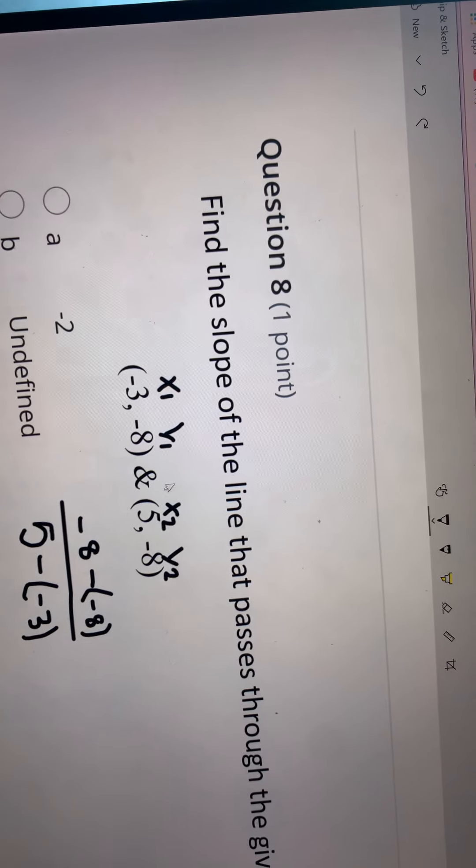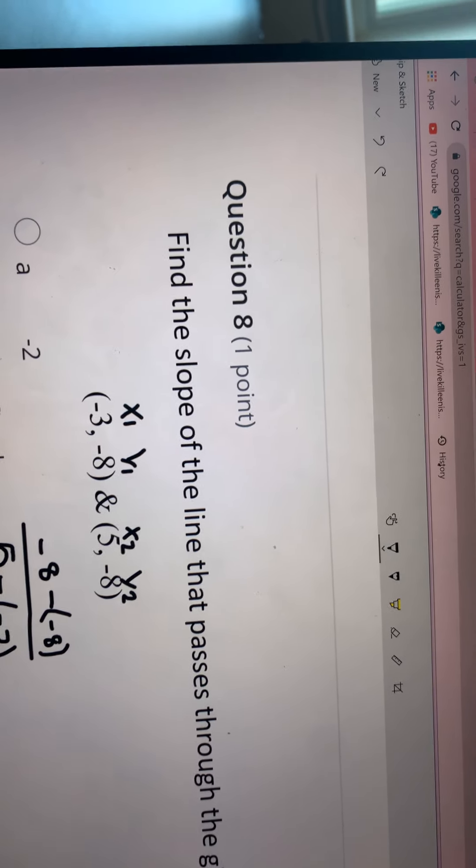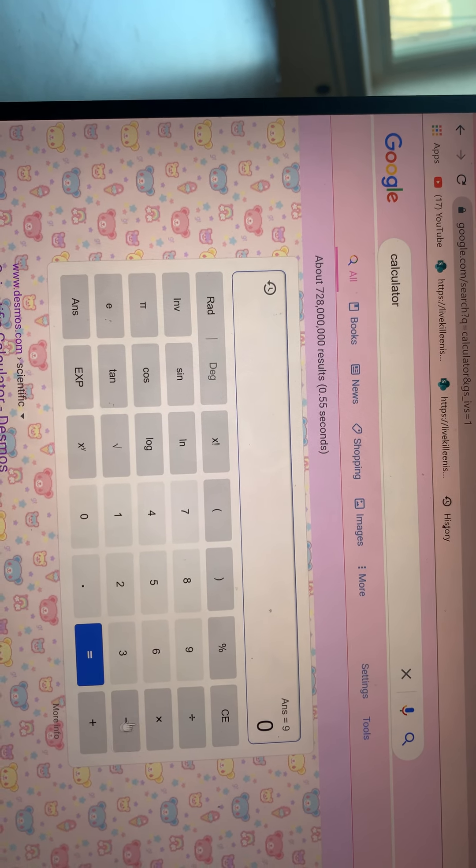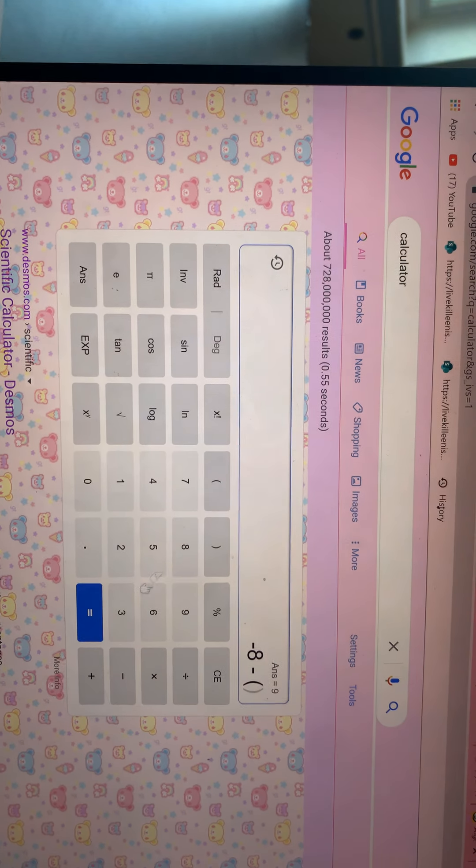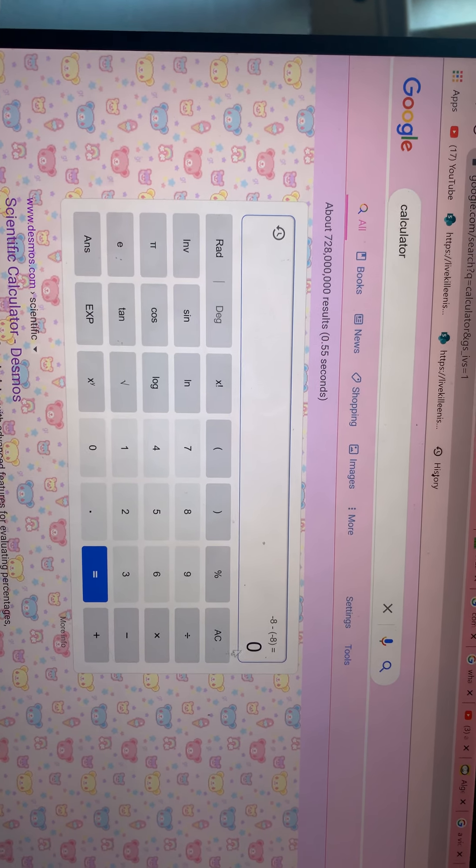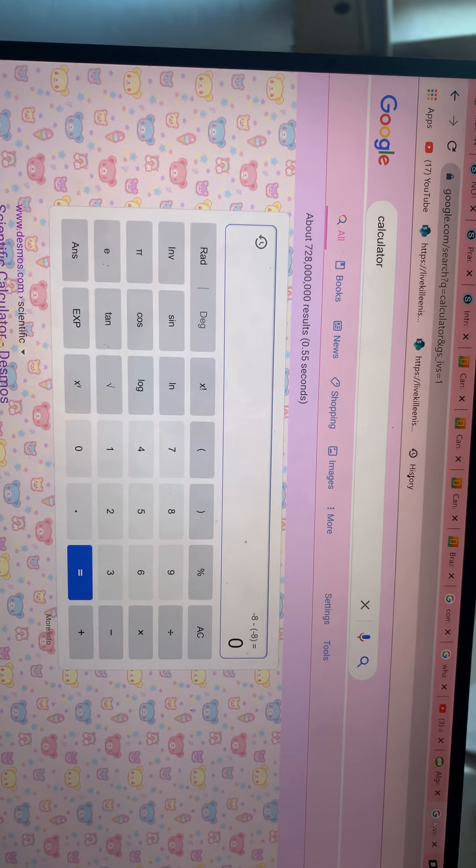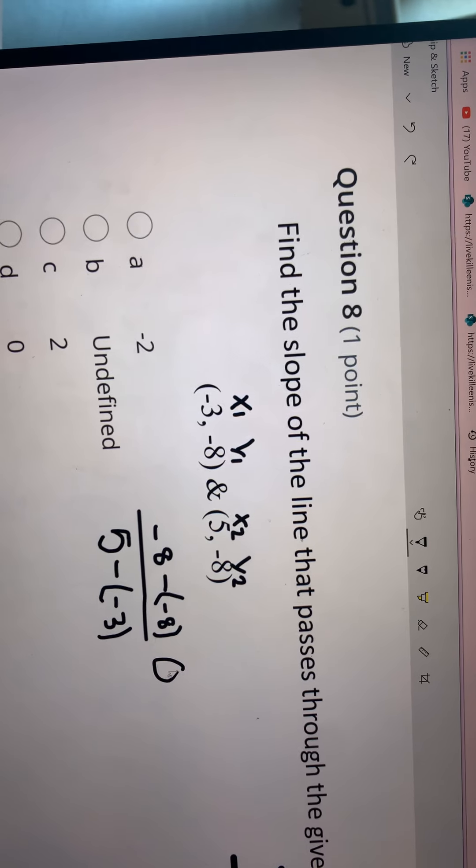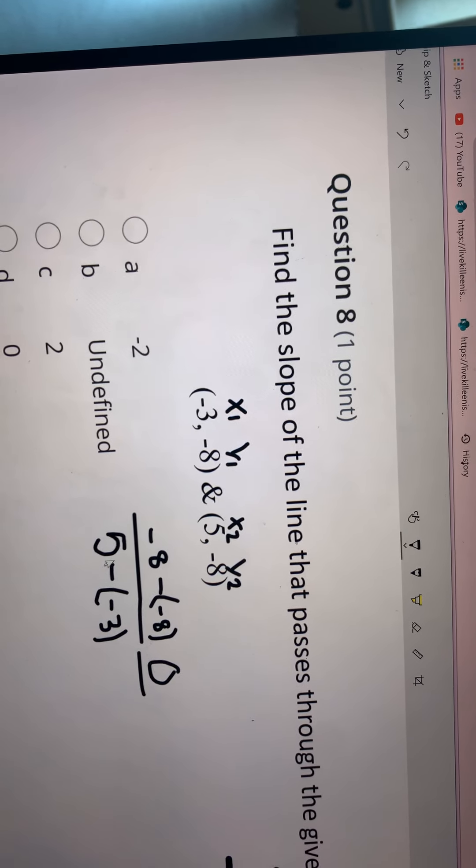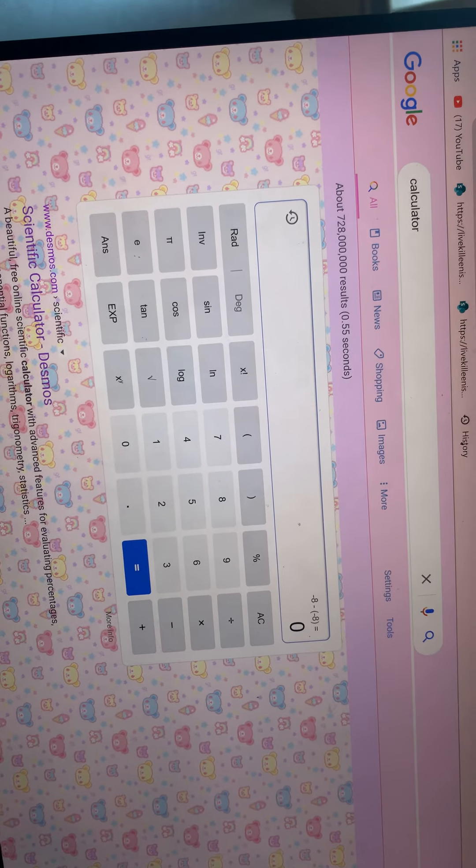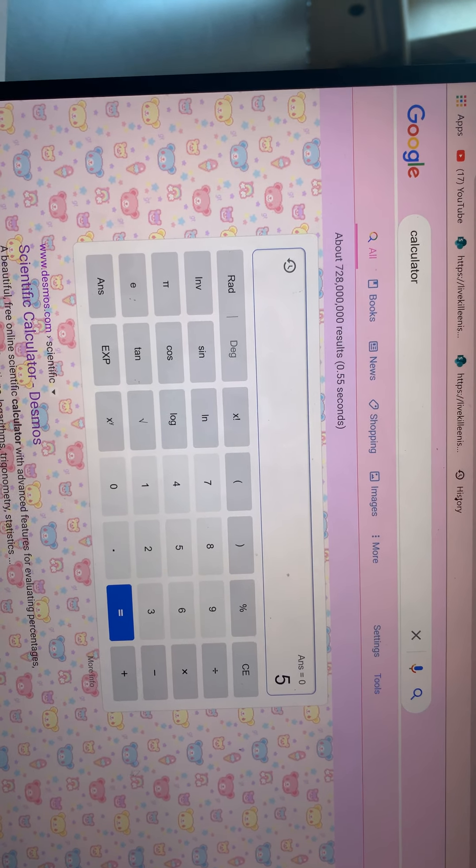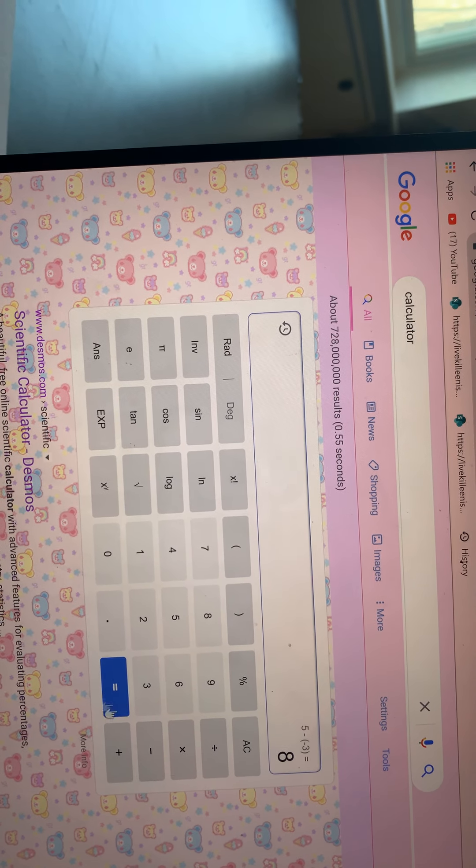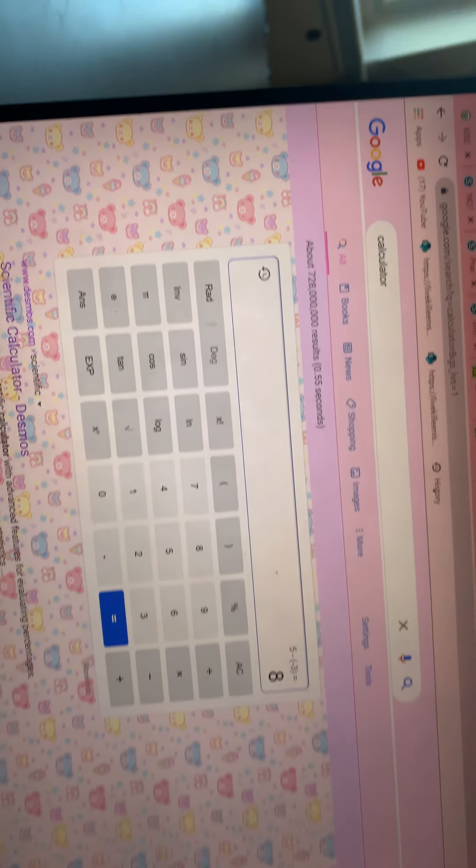We're going to do what we have here. It's negative 8 minus negative 8, which equals 0, so I'm going to put 0. Then 5 minus negative 3 equals 8, positive 8.